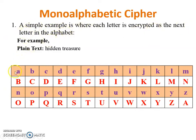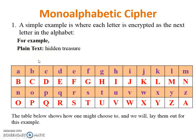Today I am going to teach monoalphabetic cipher. A monoalphabetic substitution cipher, also known as a simple substitution cipher, relies on a fixed replacement structure. It is the easiest cipher technique in network security. The substitution is fixed for each letter of the alphabet. For example, if A is encrypted to R, then every time we see A in the plaintext we replace it with R in the ciphertext. Caesar cipher is the best example of a monoalphabetic cipher.